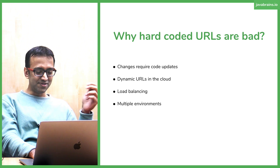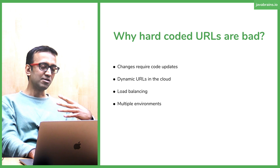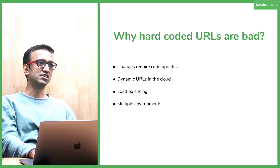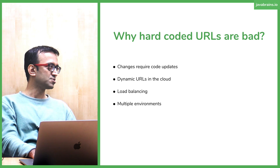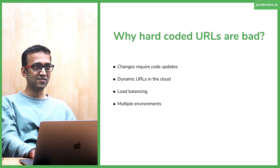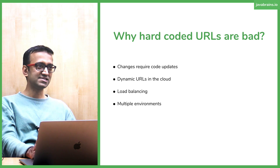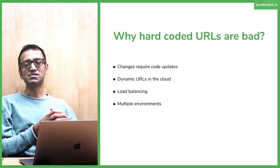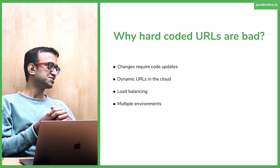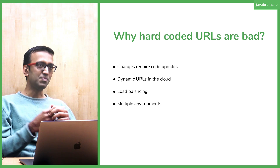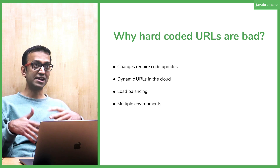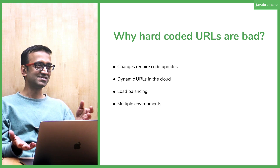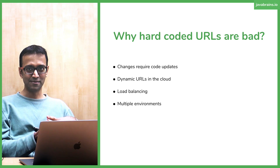The final thing I've listed here, among multiple other drawbacks, is you have multiple environments. When you're developing, the URL is localhost. When you deploy into a QA environment, it's going to be QA slash whatever. And then in production, it's going to be a different URL. So you need something that is aware of which environment it's running in and, based on that, makes that call. You don't want to be writing a lot of code or configuration to make that happen.